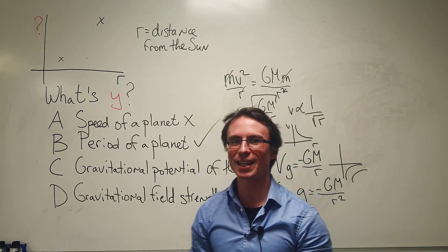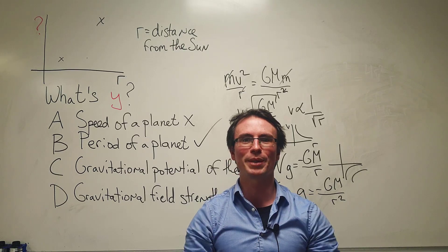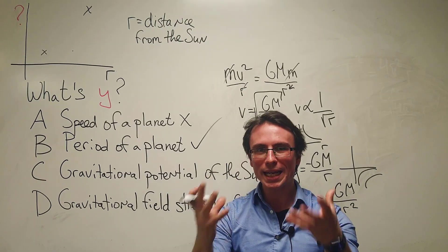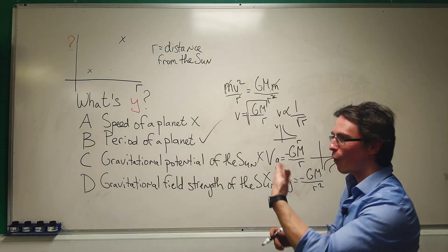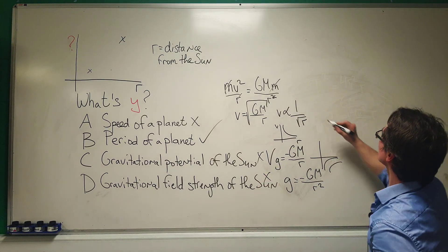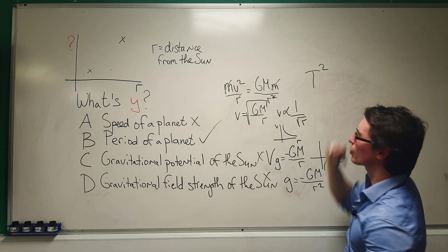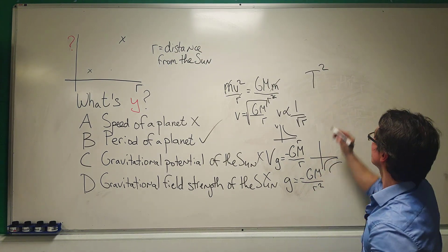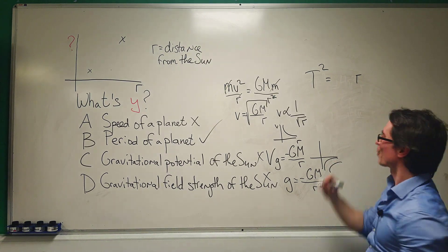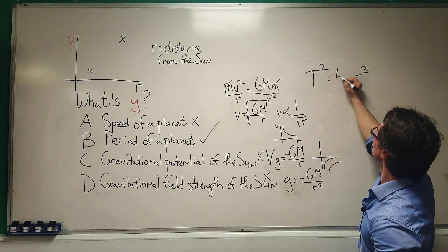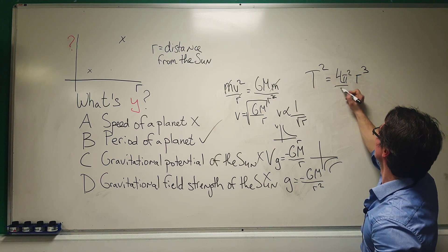Why is the correct answer B? Well this is all about Kepler's third law. Remember Kepler's third law says that the square of the orbital time period is proportional to the cube of the orbital distance r cubed. There's a constant of proportionality here which is 4π squared over GM.